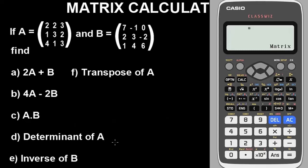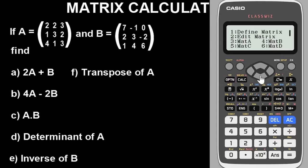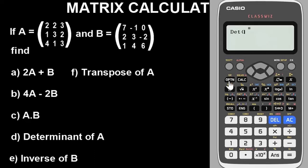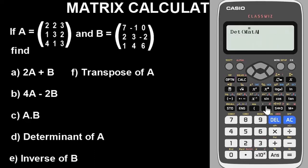To find the determinant of matrix A, press option and go down using the down arrow button. You'll see the determinant option. Select determinants of matrix A — press option then 3, then close the bracket and press equals. The determinant is negative 9.